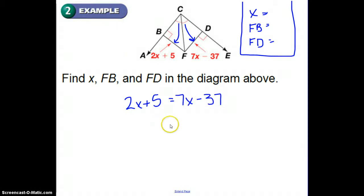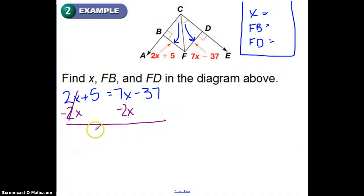So 2X plus 5 is going to have to equal 7X minus 37. So in this one, if I'm going to solve it, I'm going to solve for X first. So I'm going to start by subtracting 2X.